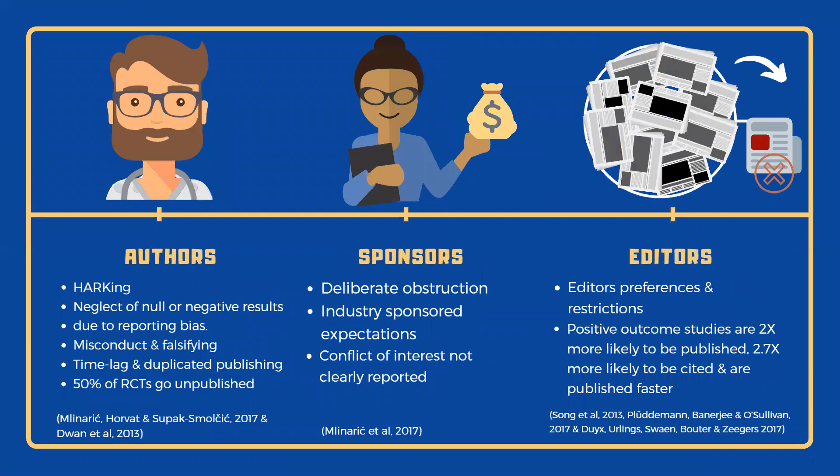For example, authors may use HARKing — hypothesizing after the results are known — or may completely falsify published data when facing statistically insignificant or contradicting results. Time lag bias might occur if a rushed or delayed publication of a study influenced a meta-analysis, because a researcher's journal of preference rejected their paper. Some researchers may publish to many journals to increase their exposure, but this increases the likelihood of duplication bias and the trial being included multiple times in a meta-analysis.